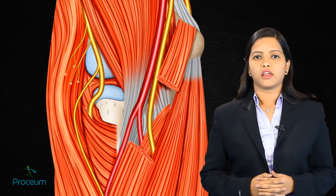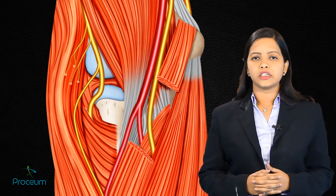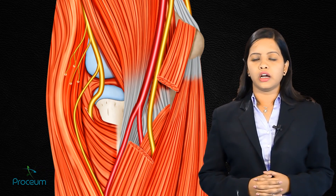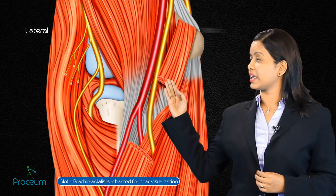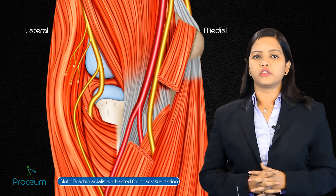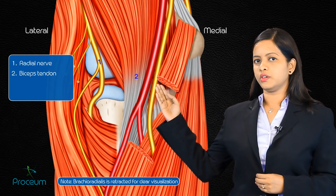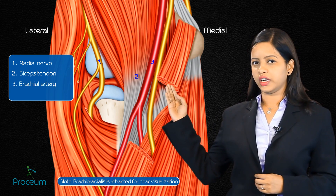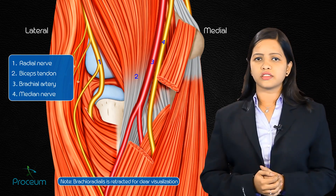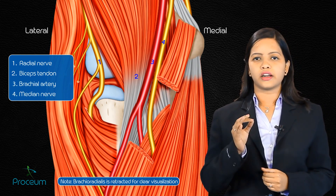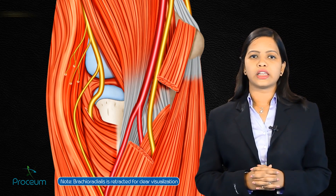The contents of the cubital fossa from lateral to medial are: the radial nerve, the biceps tendon, the brachial artery, and the median nerve. Let us discuss these contents in detail.